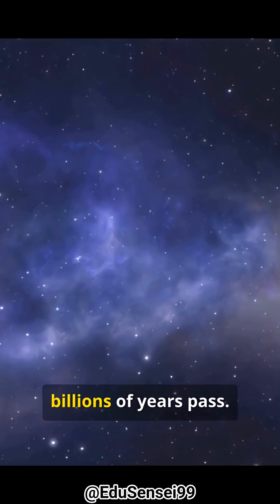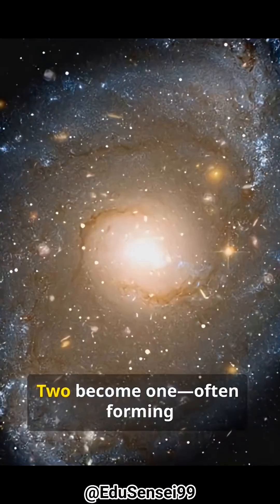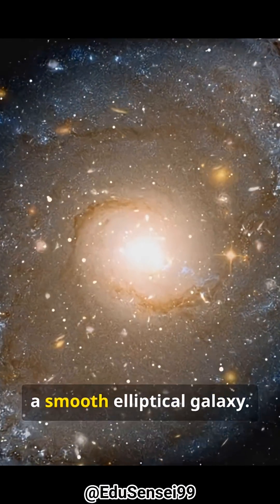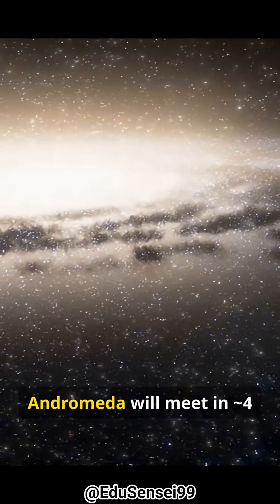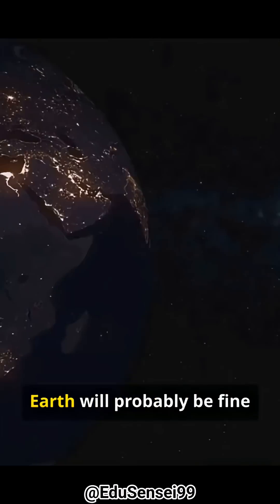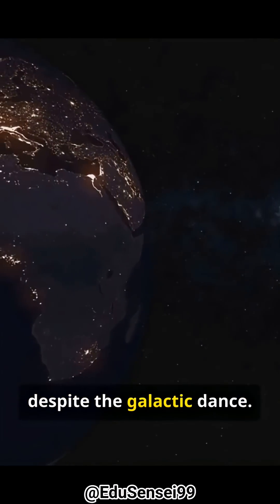After hundreds of millions to billions of years pass, two become one, often forming a smooth elliptical galaxy. Fun fact, the Milky Way and Andromeda will meet in 4 billion years. Earth will probably be fine despite the galactic dance.